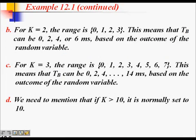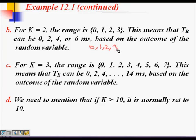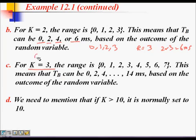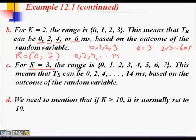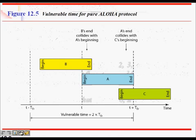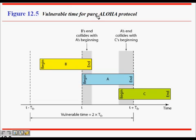For k=2, r ranges from 0 to 3, so the backoff time can be 0, 2, 4, or 6 milliseconds. For k=3, r ranges from 0 to 7, giving waiting times from 0 up to 14 milliseconds. When k exceeds 10, we cap k at 10. This exponential backoff is the standard approach for Pure ALOHA.